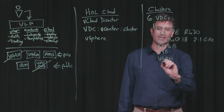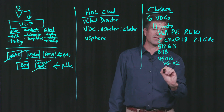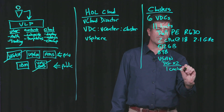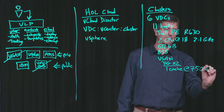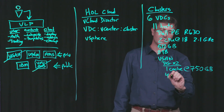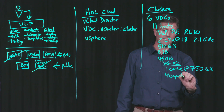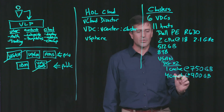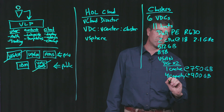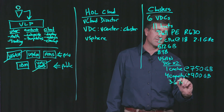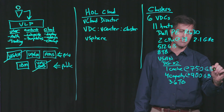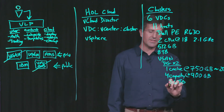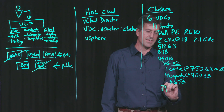The vSAN is configured with two disk groups per host. Each disk group has one cache drive at about 750 GB and four capacity drives at about 900 GB each. So each disk group provides roughly 3.6 terabytes to the vSAN, and the 750 GB cache is roughly 20 percent — which is a general best practice. With two disk groups, each host provides about 7 terabytes to the vSAN.